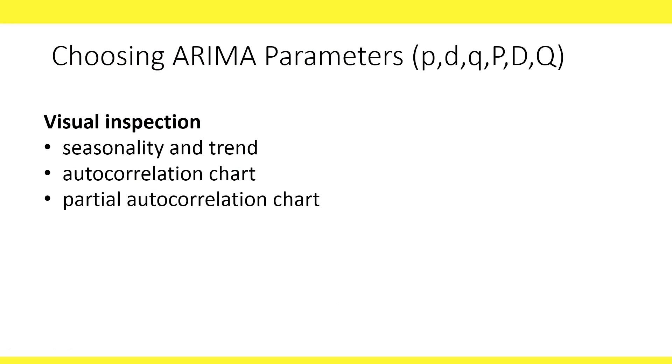ARIMA models require the user to specify the parameters PDQ and capital PDQ. This is not a simple choice and requires some experience and expertise. The typical method for determining these parameters is using visual inspections of the series to detect seasonality and trend, as well as looking at the autocorrelation chart and partial autocorrelation chart. A lag k partial autocorrelation is the lag k autocorrelation after accounting for all the autocorrelations at lower lags.